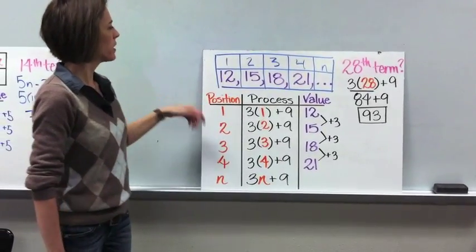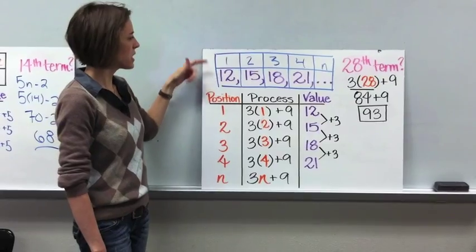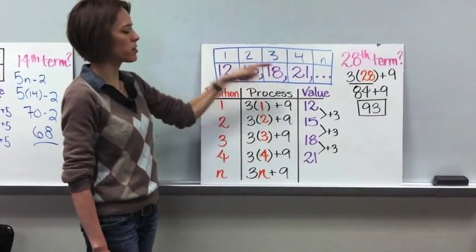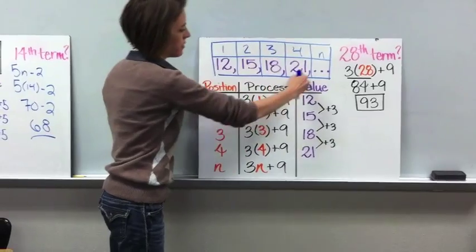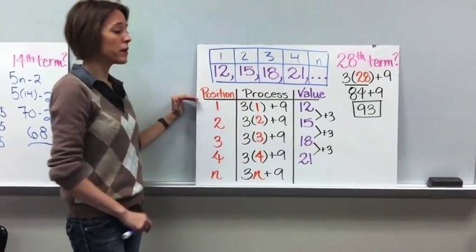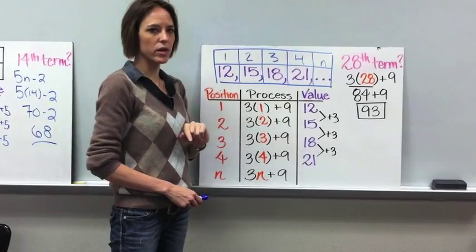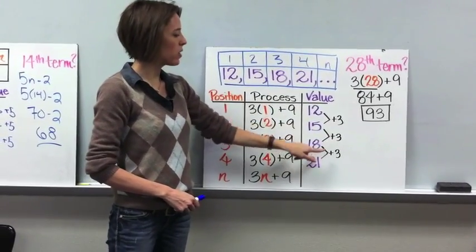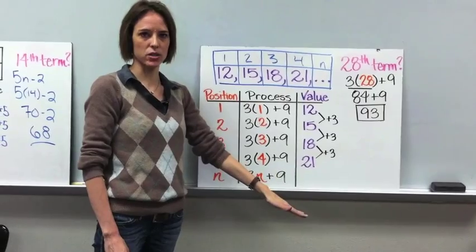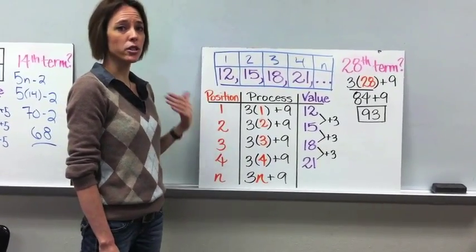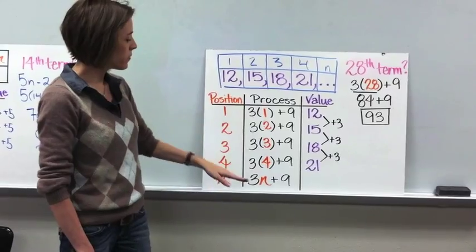Let's go over number two quickly. You should have taken your sequence and turned it into a table — this is just to indicate which term we're talking about: first term, second term, third term, and so on. We put it into the table with the position number and the value, leaving the process blank in the middle. The first thing you should have done is find your common difference. To get from 12 to 15, you add 3; 15 to 18, add 3; 18 to 21, add 3. So the common difference is 3. That's not realistic for finding a large term like the 39th or 157th, so we use the expression instead.